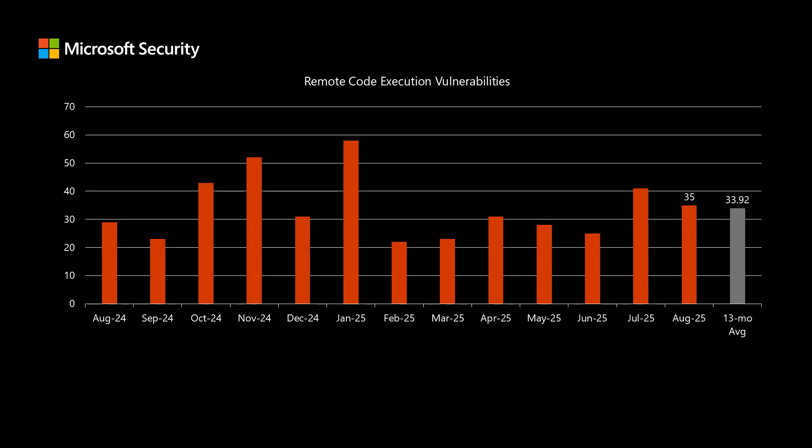Before I dig into today's release, I like to compare it to the previous 12 months to see how it stacks up. There were 109 newly disclosed vulnerabilities, and of today's set, 35 fall into the remote code execution impact. This is the type of impact that typically has the most risk associated to it — it would allow a threat actor to install software on vulnerable devices. So that 35 this month is just a little bit higher than we've been seeing over the past 13 months of just under 34.